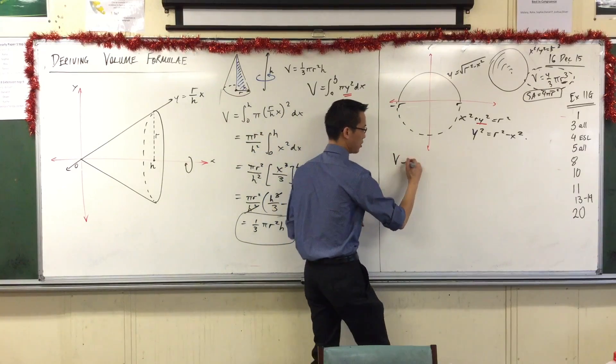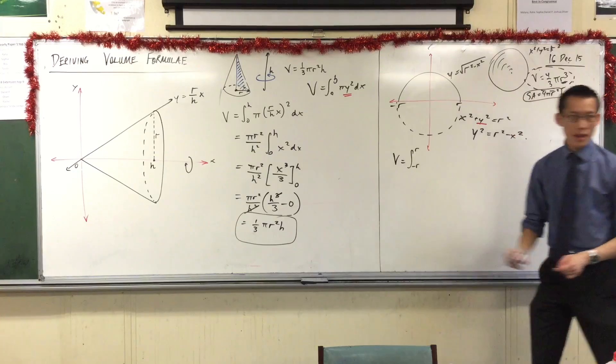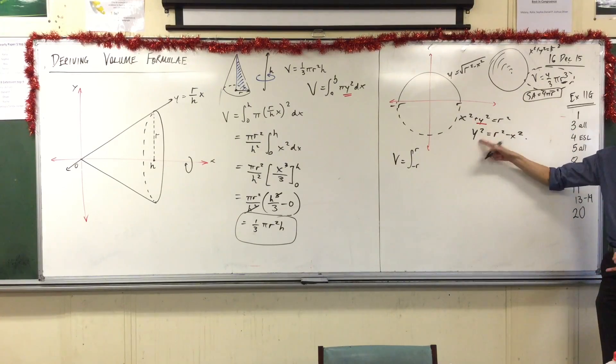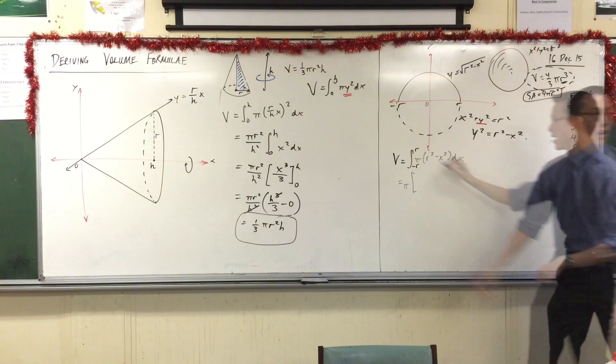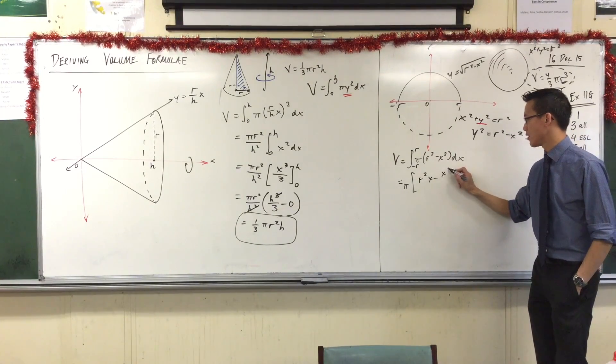And now I'm ready to form my integral, right? I just say the volume is equal to, got my boundaries. Now, I've got y squared right there. I don't need to square this again. That's already been squared. What's the primitive? Yeah? r squared x minus x cubed over 3. Very good.